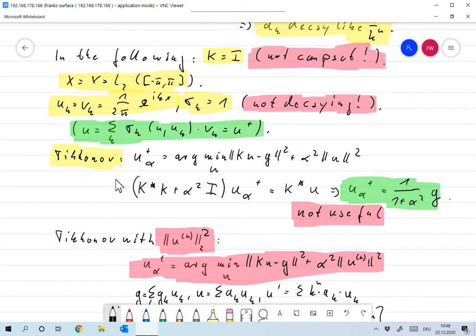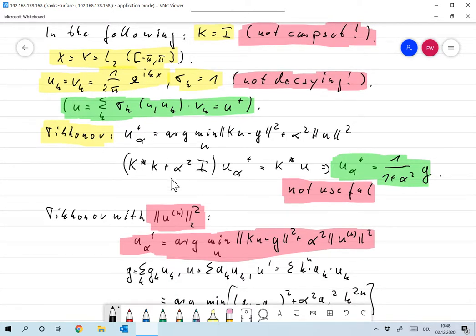Now using our normal formalism we can look at Tikhonov also for this problem. In that case we have u alpha plus is the argument minimum of norm k u minus g squared plus alpha squared times norm of u squared. We already proved that this u alpha plus satisfies the equation k adjoint k plus alpha squared I times u alpha plus equals k adjoint times g. But now if k is the identity operator, we find that u alpha plus is nothing but one over one plus alpha squared times g.